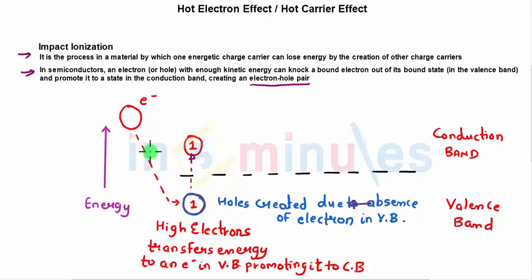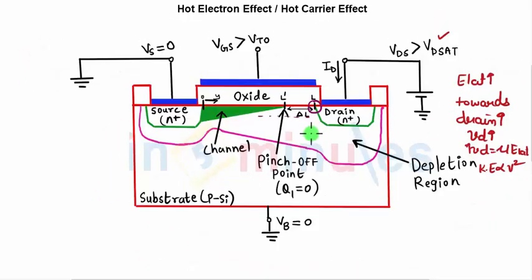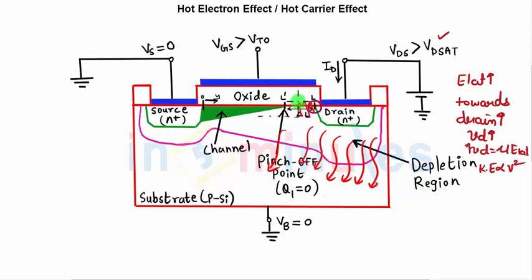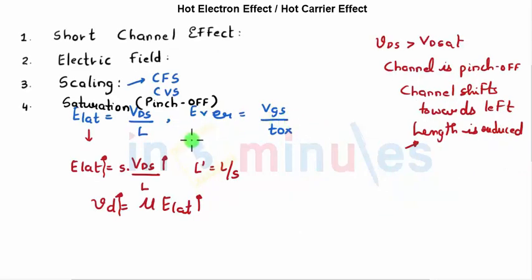Many of these energetic electrons transfer their energy to valence-band electrons, moving them to the conduction band and leaving behind many electron-hole pairs. The holes, being in the p-type region, move back to the p-substrate, leading to a substrate current — which is technically not desirable.